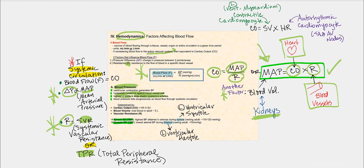Systolic blood pressure is the highest blood pressure attained in the arteries during systole, representing when our left ventricle fully contracts — left ventricular systole. Diastolic blood pressure represents the afterload, the back pressure, when our left ventricle is completely relaxed. On this slide it's showing 70 millimeters of mercury, which is not the pressure measured inside the left ventricle — it represents the afterload, the pressure applied to the aortic semilunar valve when the left ventricle is in diastole.